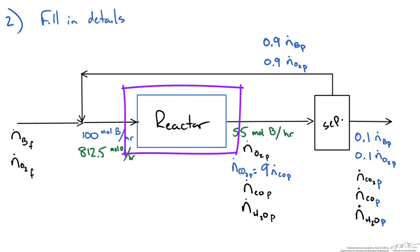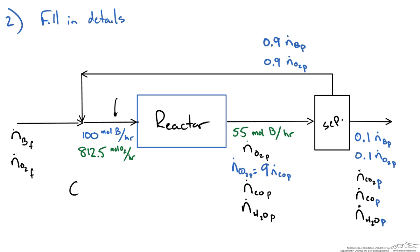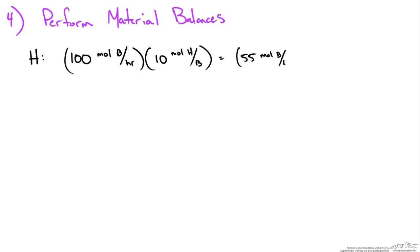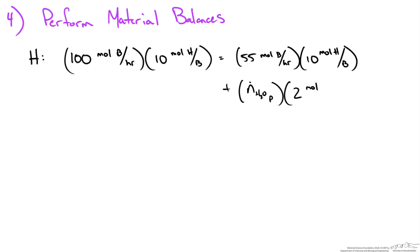Starting with the hydrogen balance over the reactor: hydrogen enters in butane (C4H10), giving 10 moles of H per mole of butane. Leaving, we have hydrogen in butane and in water, with 2 moles of H per mole of water. So 100 mol/hr butane × 10 mol H/mol butane = 55 mol/hr butane × 10 mol H/mol butane + N_H2O × 2 mol H/mol water. Solving gives 225 moles of water per hour.